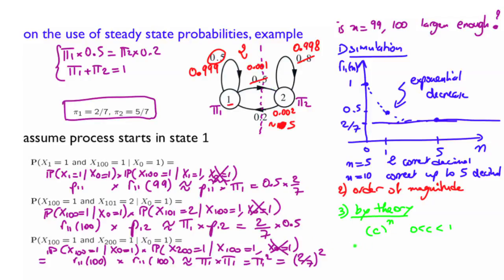And for example, here, for our initial case, the c was 0.3. So that was the first case. For the second chain, with this kind of probability, 0.99 and 0.998, the c would be 0.997.